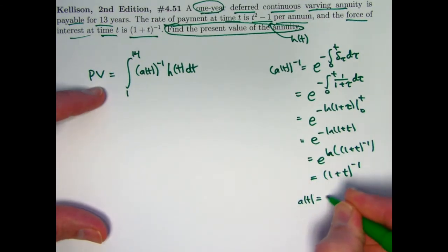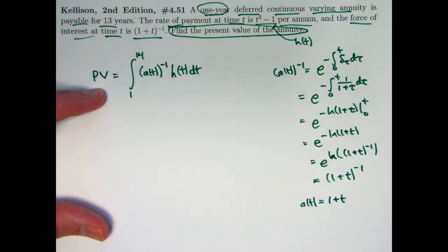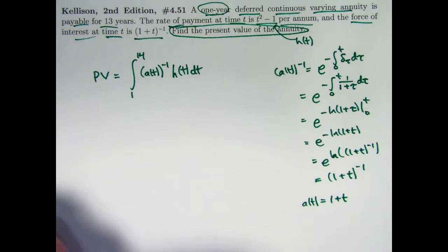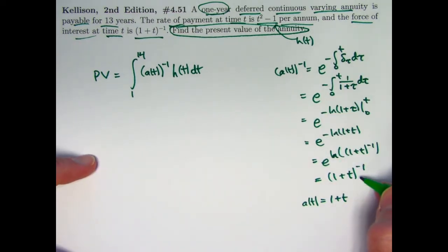A of t itself is really 1 plus t. This is simple interest with a 100% annual interest rate. Though that doesn't mean the money is growing by 100% instantaneously all the time. Anyway, that is what a of t is. And this is what a of t to the negative 1 power is.